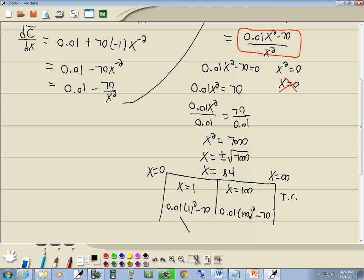100 squared is 10,000. Yeah, 10,000. 10,000 times 0.01 is 100 I believe. 100 minus 70 is positive, so it's increasing. So this is indeed a min.